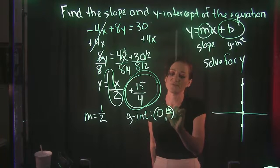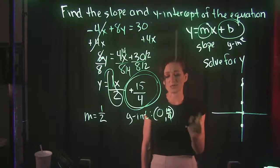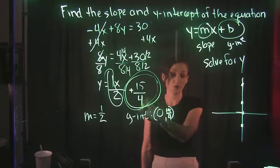The y-value is going to be whatever this number is back here. And we have a 15/4. So that means the y-intercept is (0, 15/4).